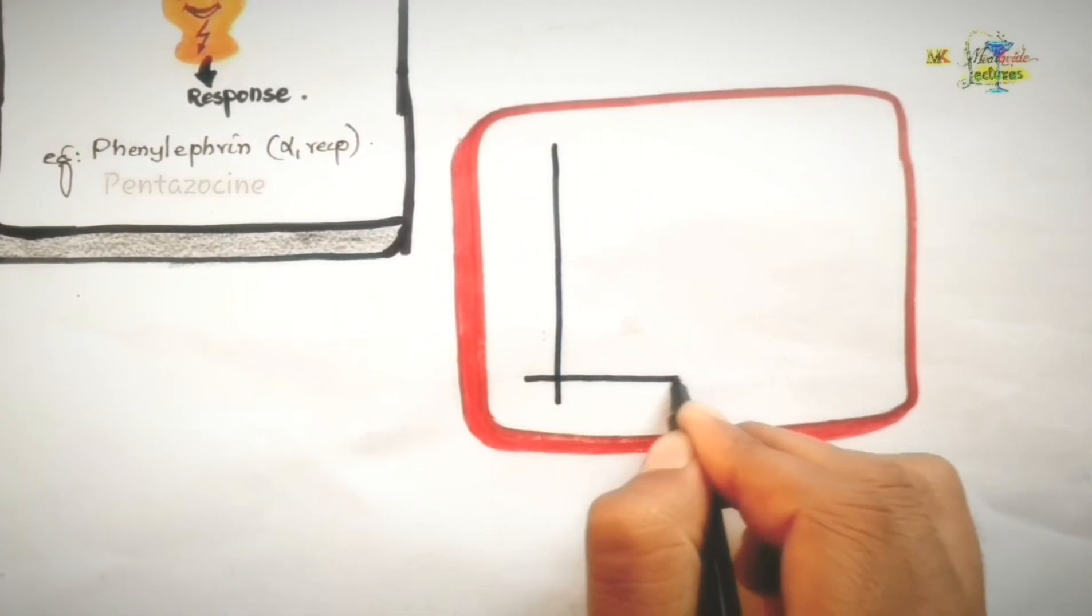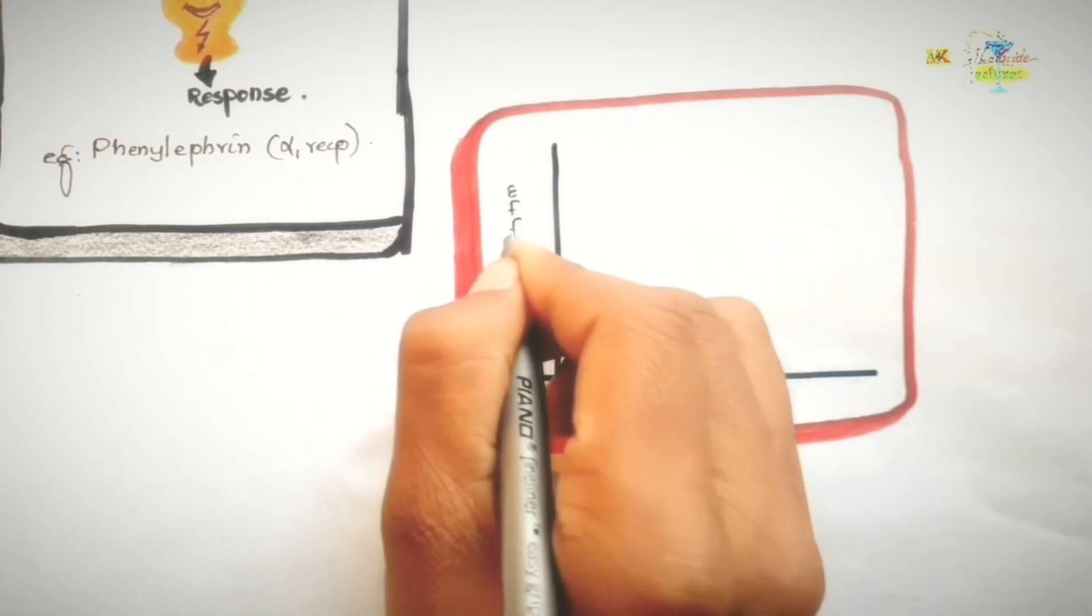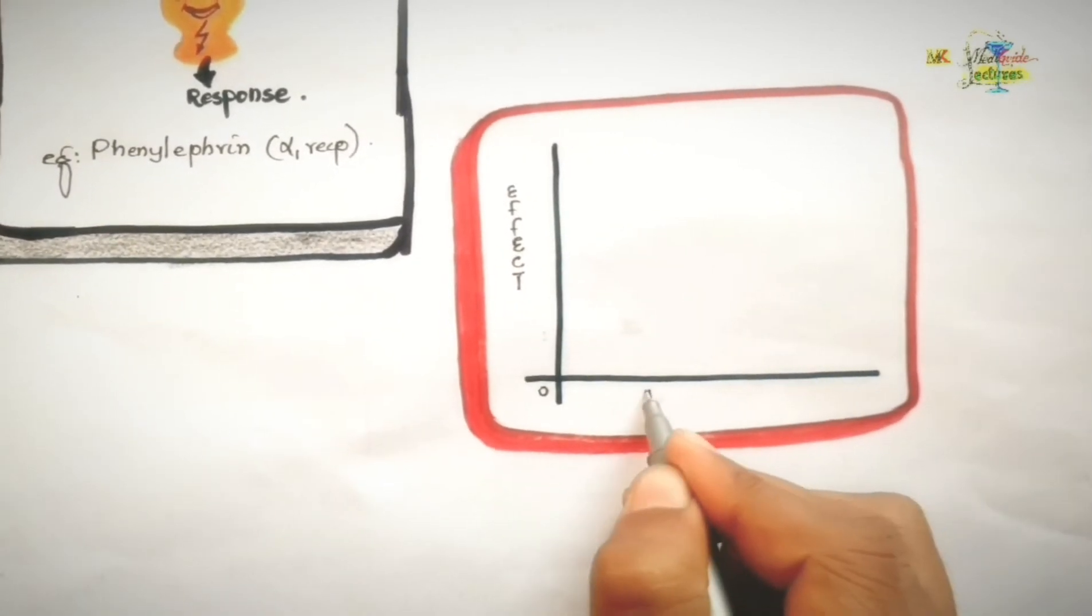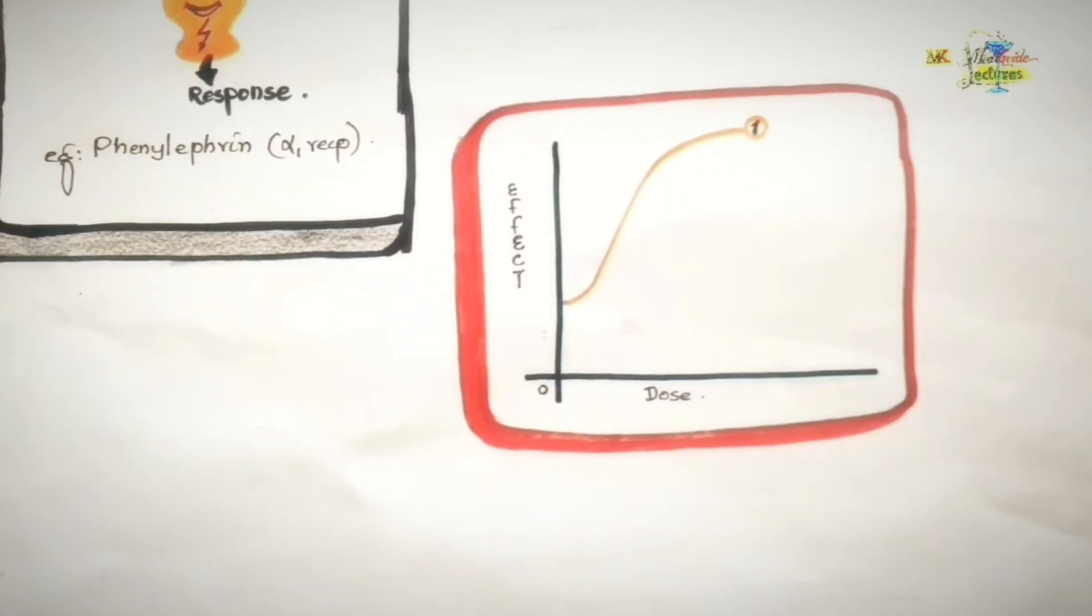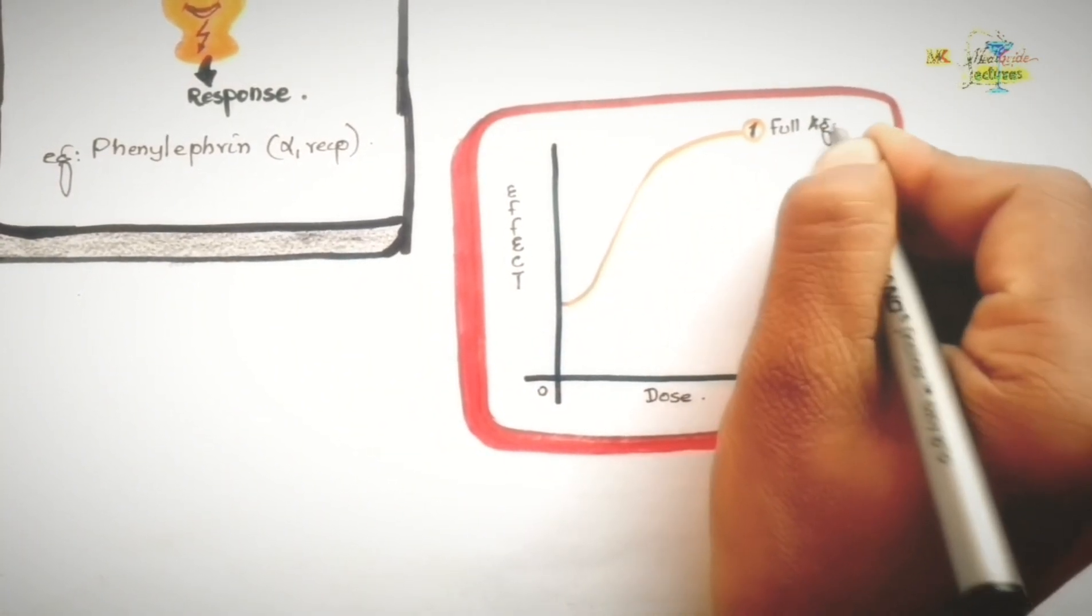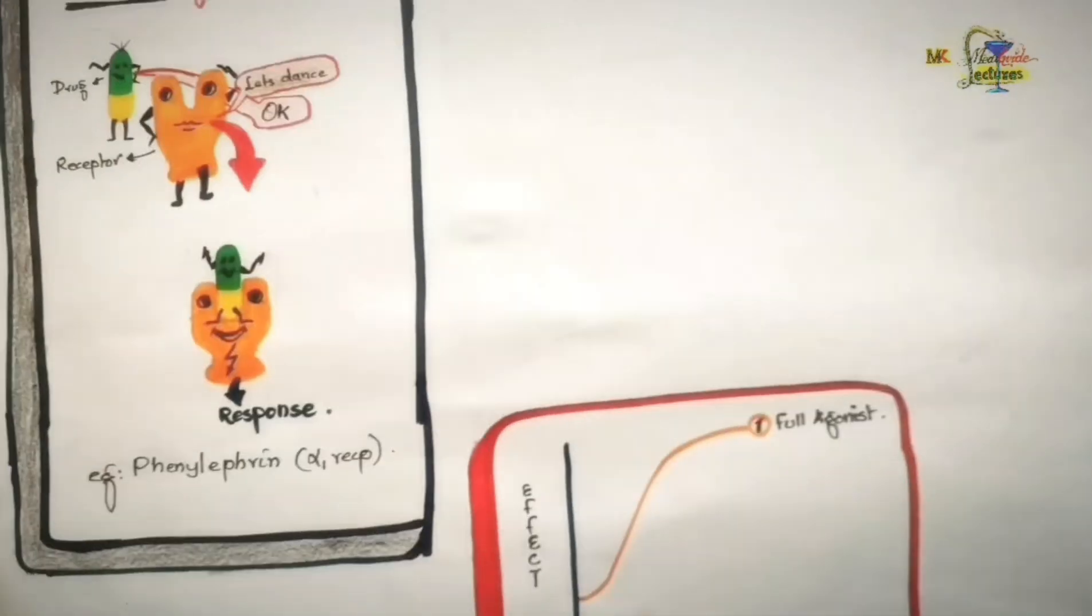For graphical representation, we take the effect or response of the drug on y-axis and dose or concentration of the drug on x-axis. In this case, the drug will show its full effect, meaning maximum response.